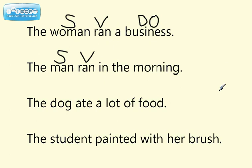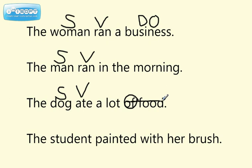Next, we have another sentence: the dog ate a lot of food. Our verb here is ate. Who ate? The dog. What did the dog eat? Well, you might be tempted to say food, but remember, when you see of, that's a preposition, and you need to get rid of that phrase — so of food, you need to get rid of that. So what are we left with? The dog ate what? He ate a lot. Can you have a lot? Yep, so it can be a noun, and it is our direct object here.